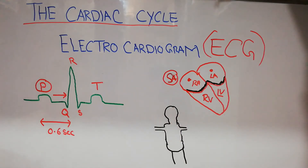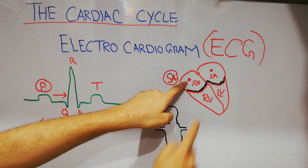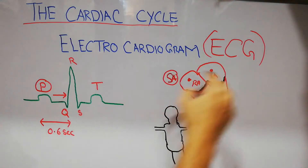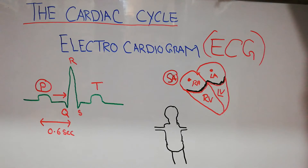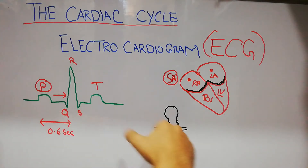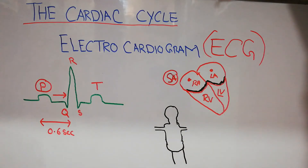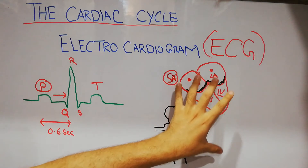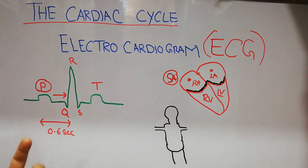Blood returns to the heart into the right atrium and the whole process repeats again 24/7 throughout life. Blood is coming into the right atrium and right ventricle at the same time, so two different circuits — the right and left circuit — operate simultaneously: one pumping blood into the lungs and the other pumping blood into the body. That is the cardiac cycle.